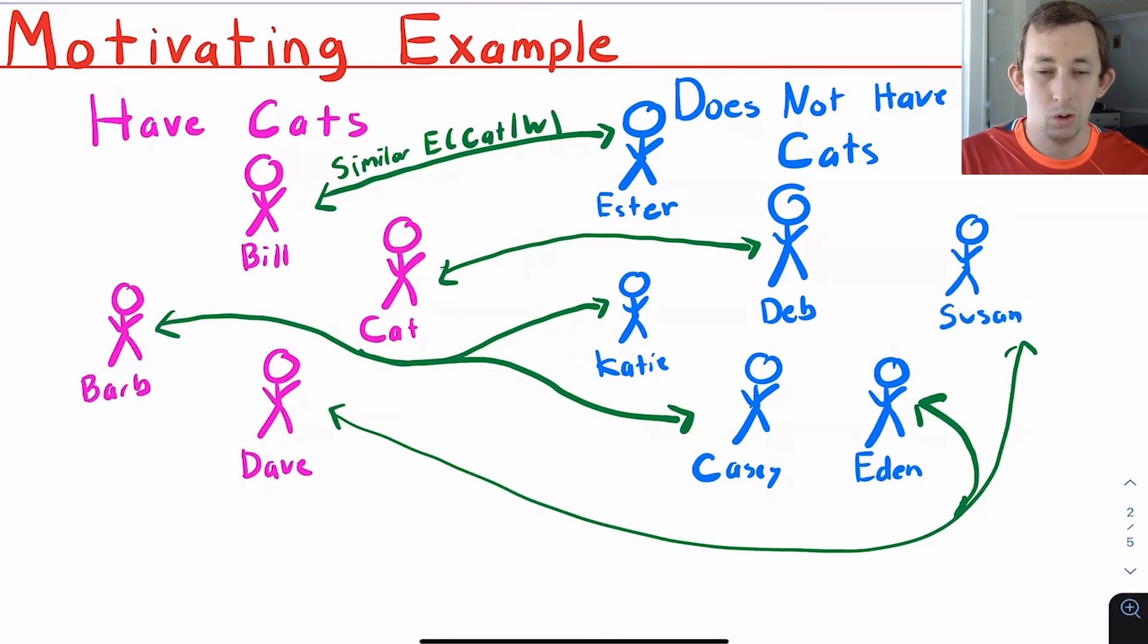Then we look at this control group. We've estimated a similar score, propensity score, a likelihood that we think each of these people who did not have a cat maybe would have a cat. So maybe Esther, we know that she doesn't have a cat, but again we look at all the observable characteristics about Esther. We see that Esther has a 60% chance of being treated. We would guess there's probably a 60% chance that Esther would have a cat.